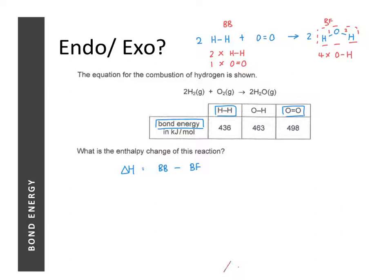To compute the energy change, we sum the energy required to break all the bonds: (2 × 436) + (1 × 498), then subtract the total energy released when bonds are formed: (4 × 463). That gives a total energy change of −482 kJ per mole.